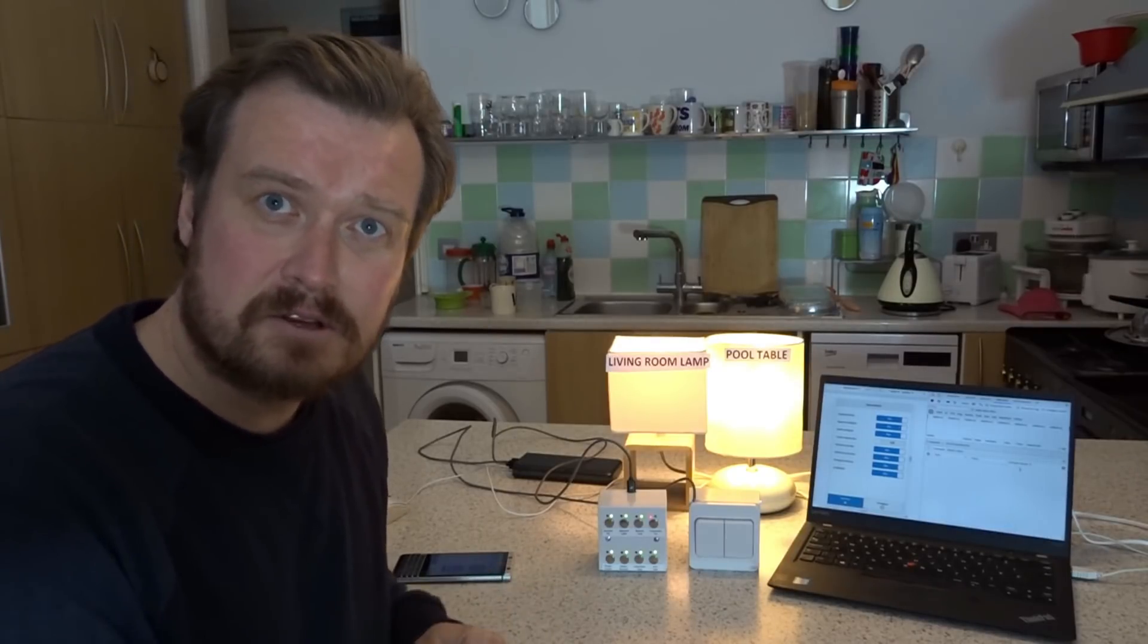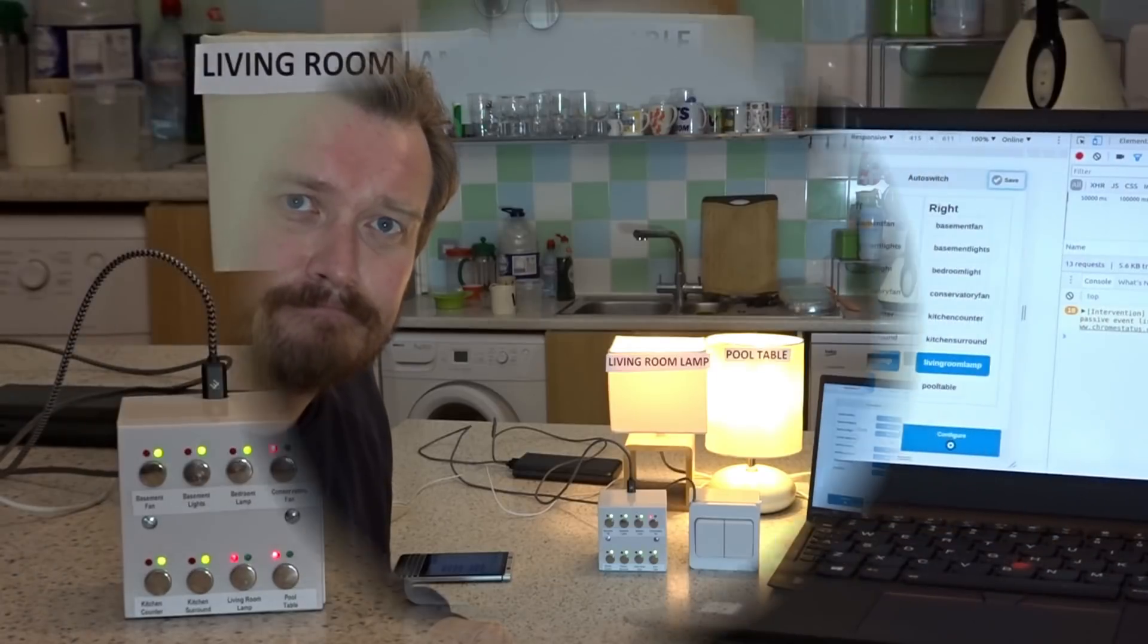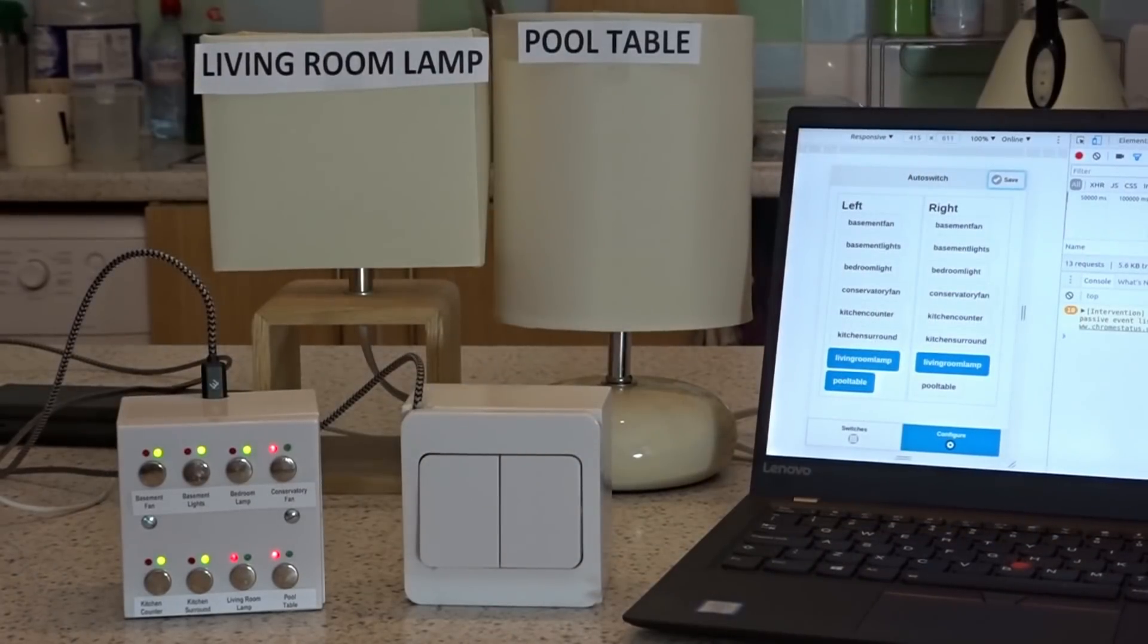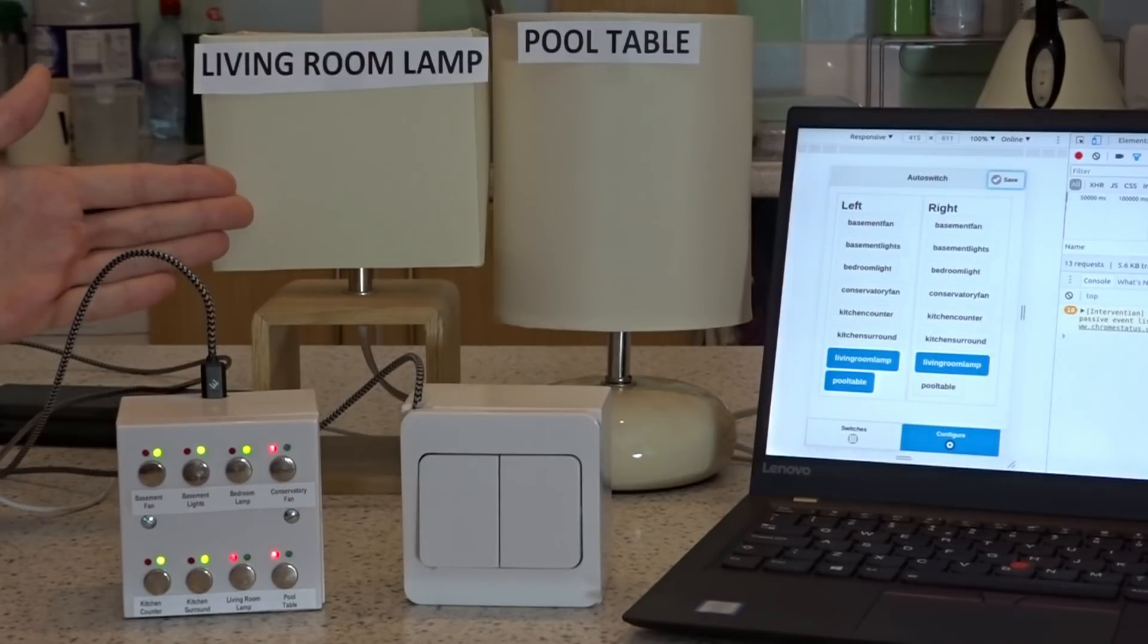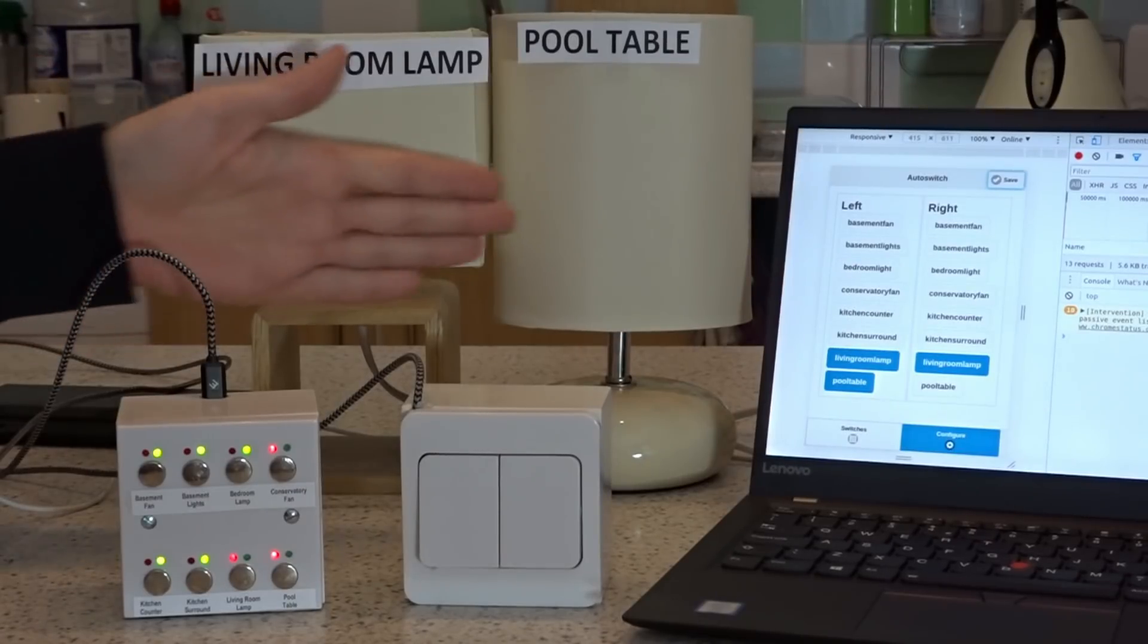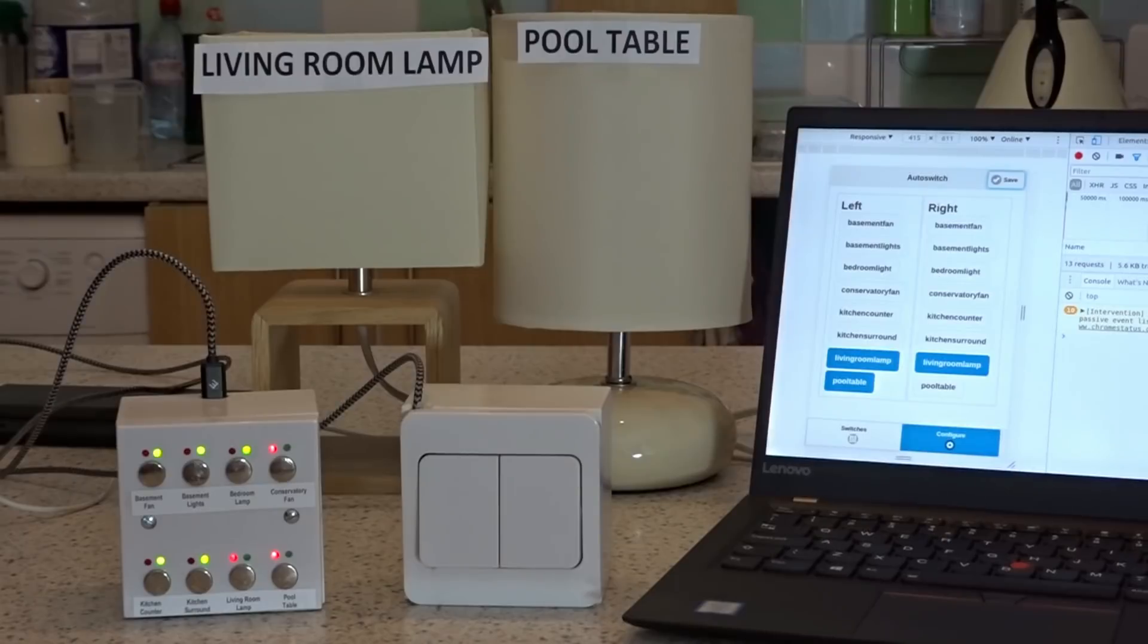So let's go into some more detail now and see what's going on behind the scenes. Okay, so let's go through this demonstration setup here. On the left hand side, we've got my living room lamp. On the right hand side, we've got a lamp which represents the pool table. I've yanked the switch out of the pool table overhead lights and hooked it up to this lamp.